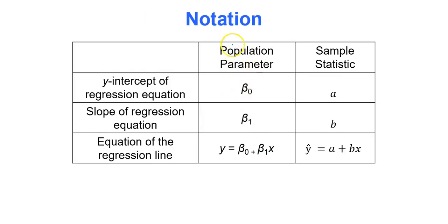Remember we use sample information to predict population information. The y intercept of the true regression equation is represented by beta naught. We have to estimate it using the value of a. The slope of the regression equation for the population is beta 1, but we must use the sample statistic b to estimate it. That's why the estimation equation is y hat equals a plus bx.